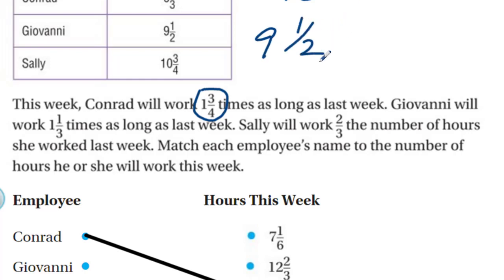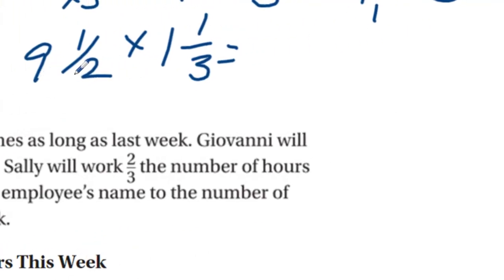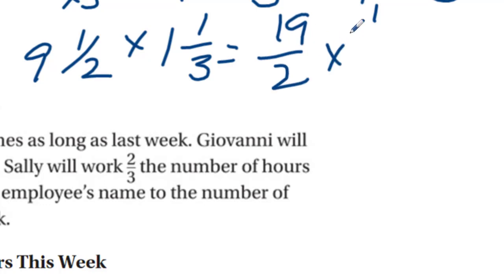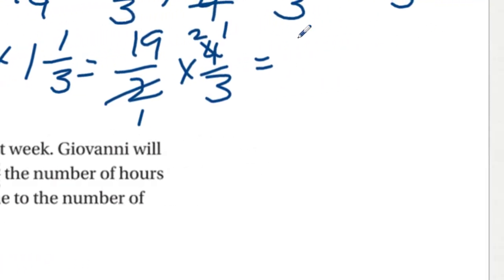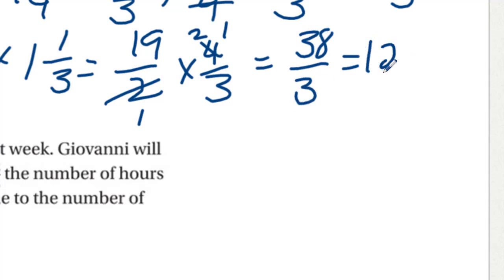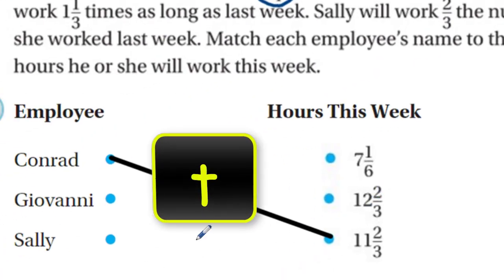Now for Giovanni, who had nine and a half hours. We multiply by one and one-third — the answer should be larger than nine and a half. Converting: nine and a half becomes nineteen halves, and one and one-third becomes four-thirds. We can cancel a factor of two, giving us 38/3. Converting: 12 times 3 is 36, leaving 2, so Giovanni gets twelve and two-thirds hours.